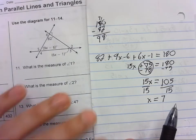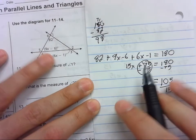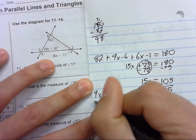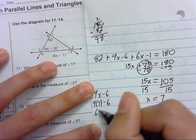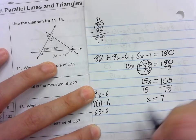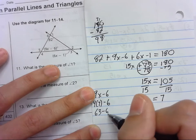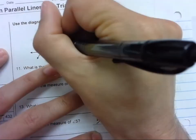So if x equals 7, we can plug in these angles. So this angle is 9x minus 6, so that's 9 times 7 minus 6. 9 times 7 is 63, take away 6, and that is 57. So this angle is actually 57.